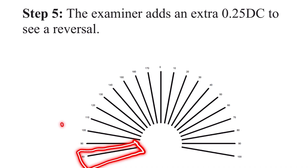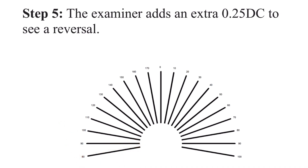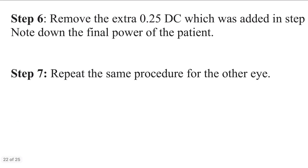Step 6 is to remove that extra -0.25 diopter cylinder added in step 5 and note down the final power. Step 7 is to repeat the same procedure for the other eye.